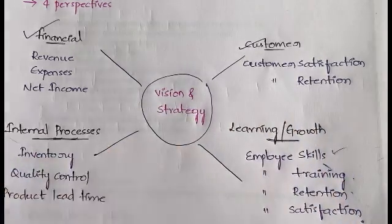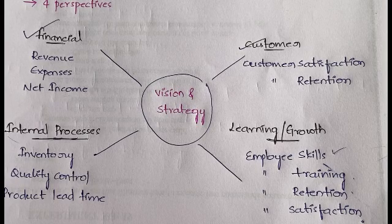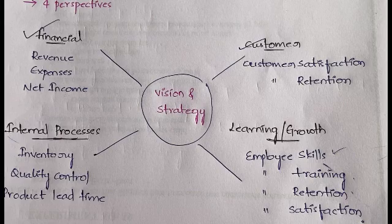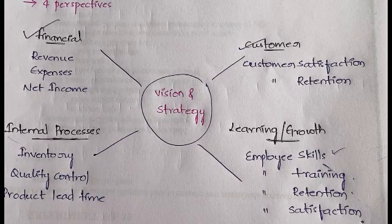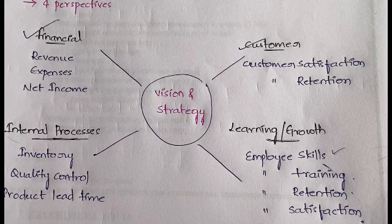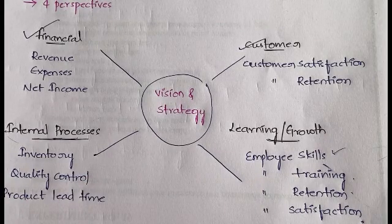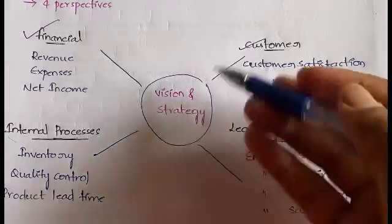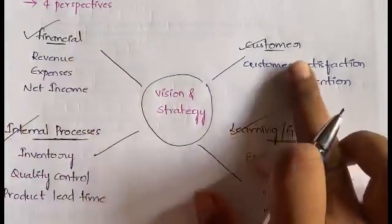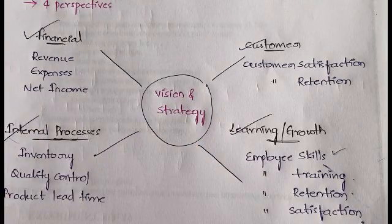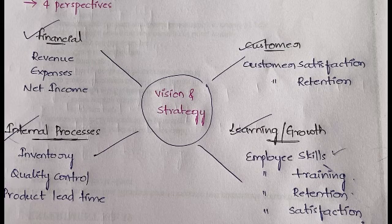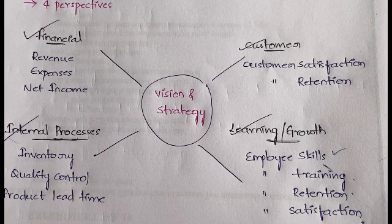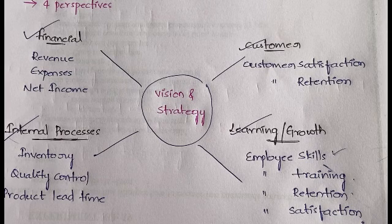The fourth perspective is Internal Processes — the processes happening inside your company. Examples include inventory control, which means making sure stock never runs out; quality control, which means ensuring quality in the products you manufacture; and product lead time. All things happening inside the company — inventory control, quality management, and price management — fall under internal processes.